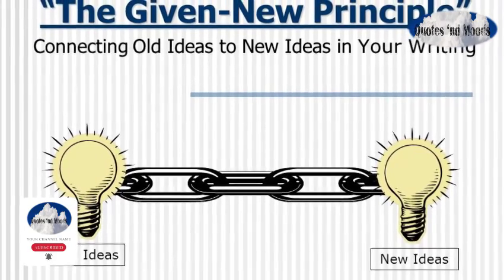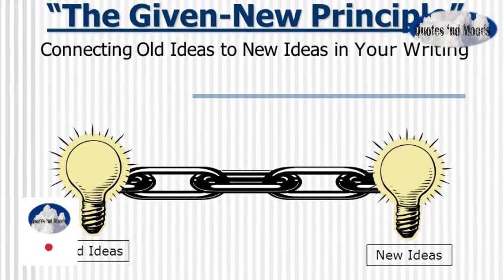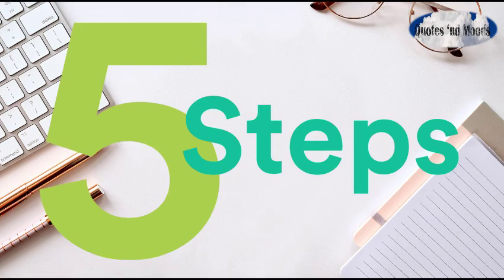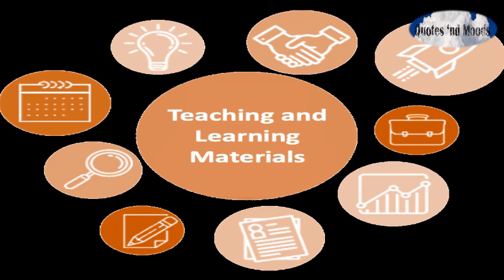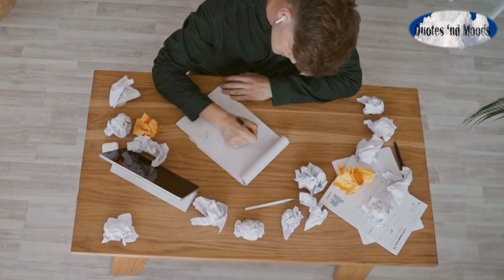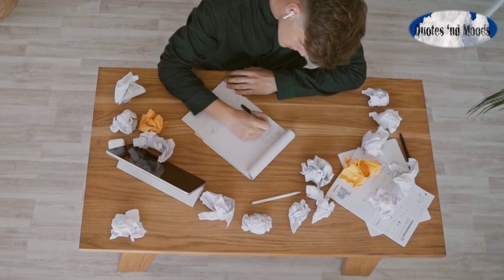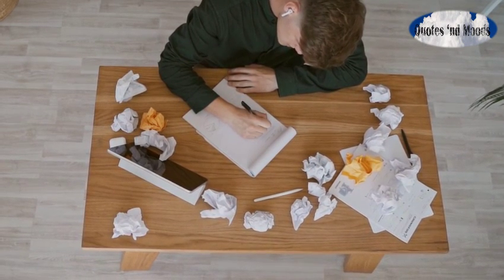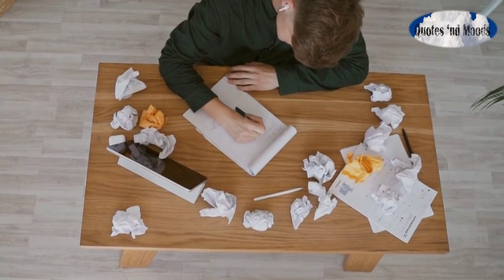Young believed this process of creative connection always occurred in five steps. One: Gather new material. First, you learn. During this stage, you focus on one, learning specific material directly related to your task, and two, learning general material by becoming fascinated with a wide range of concepts.